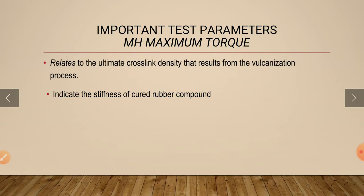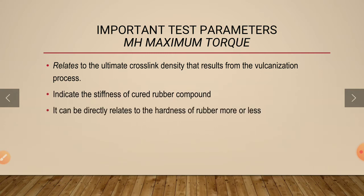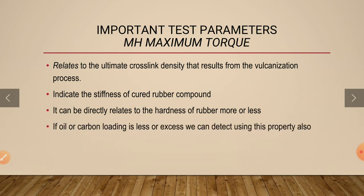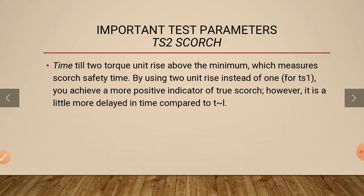Maximum torque, referred to as MH, indicates the stiffness of the cured rubber compound and relates to the ultimate crosslink density that results from the vulcanization process. It can be directly related to hardness, and similar to minimum torque, maximum torque also indicates excess or insufficient loading of carbon black and oil.